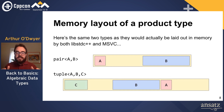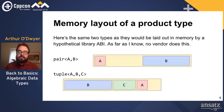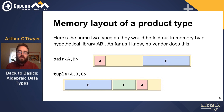GCC and MSVC switch the order of the fields in tuple, but for pair they always lay it out with the first element first and the second element second. Some hypothetical library ABI could save bytes by reordering the elements of the tuple in size order — put B first, then C, then A. There's no rule against that. As far as I know nobody does that, but it would be kind of cool.